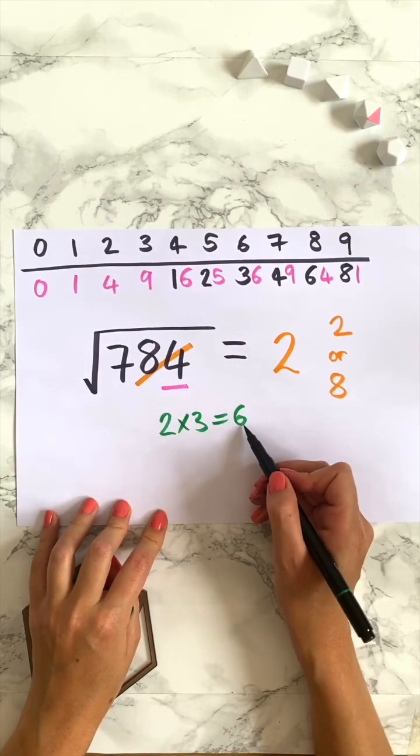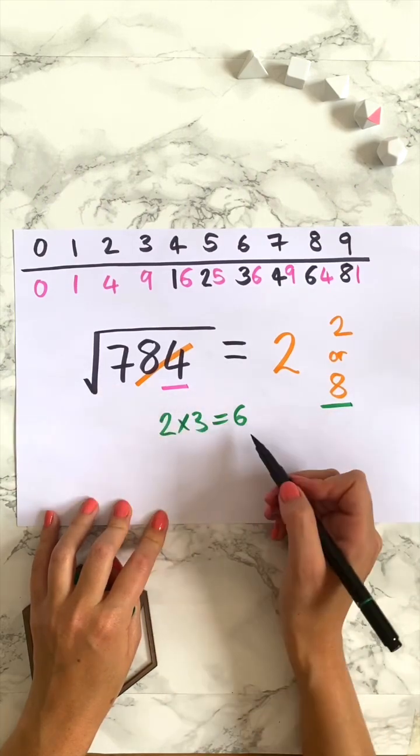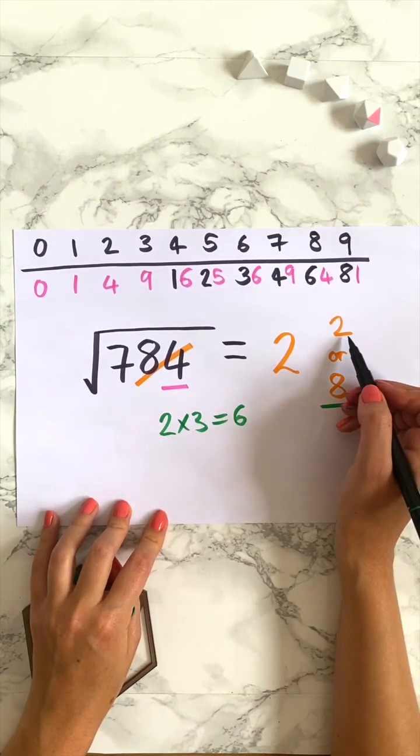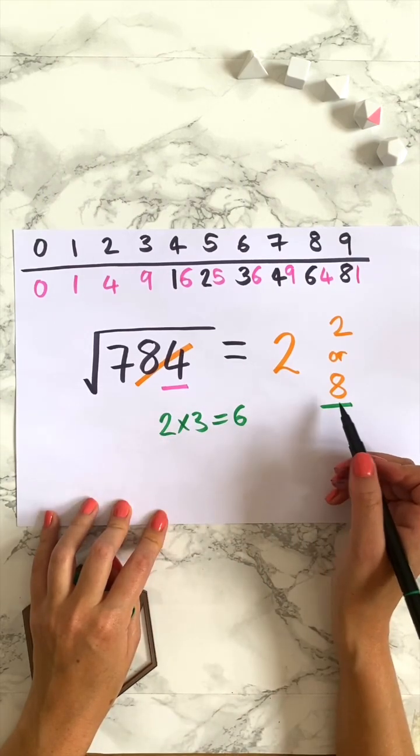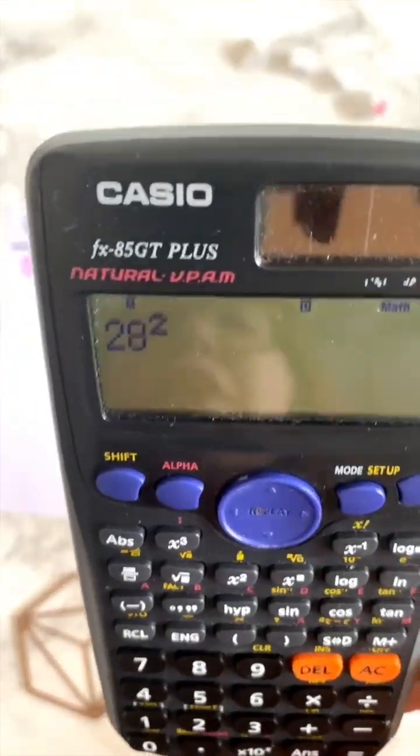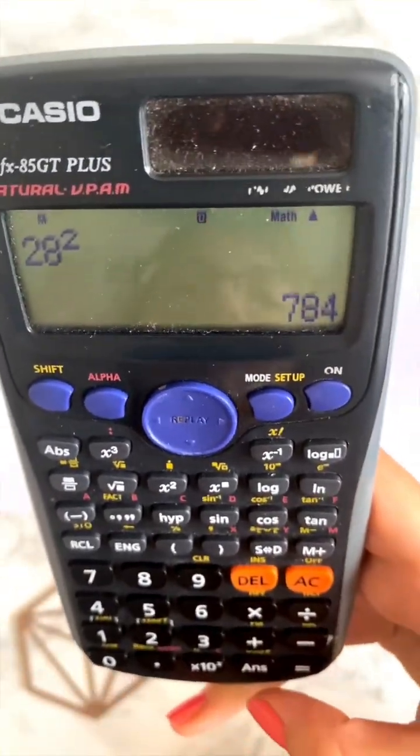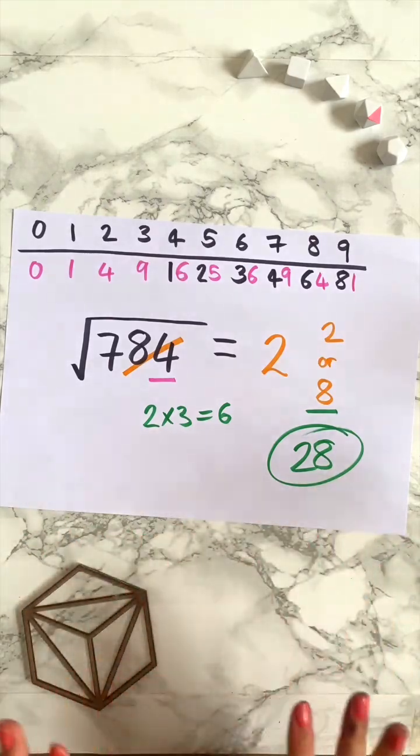7 is bigger than 6 so we take the bigger number. If 7 was smaller than this number we would take the smaller number. So 7 is bigger than 6 so we take the 8. So the answer is 28. Indeed if I check it on my calculator, 28 squared is indeed 784. So you can confidently tell Dave that the answer is 28.